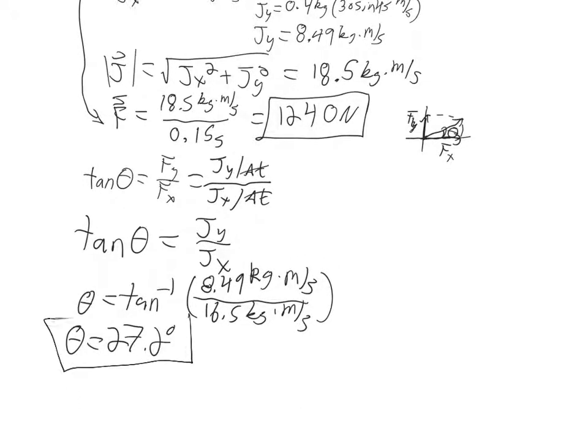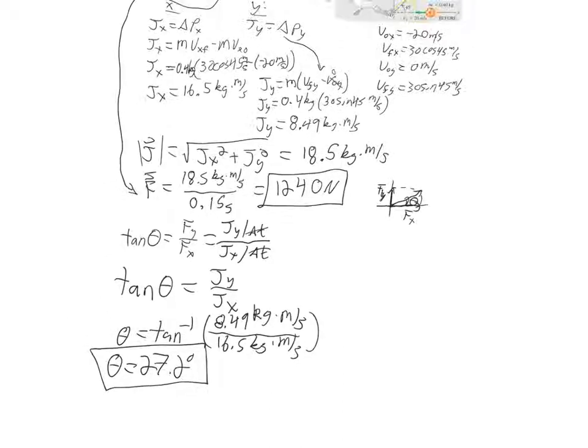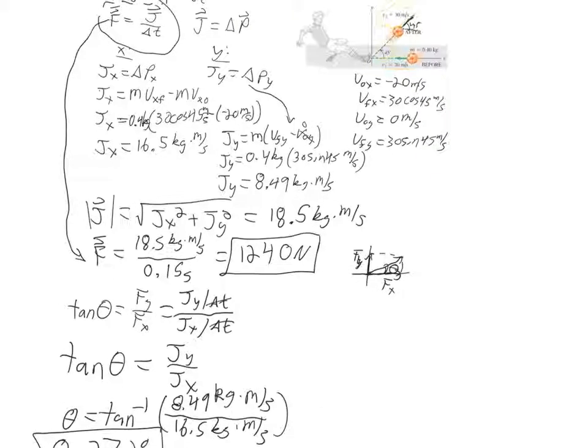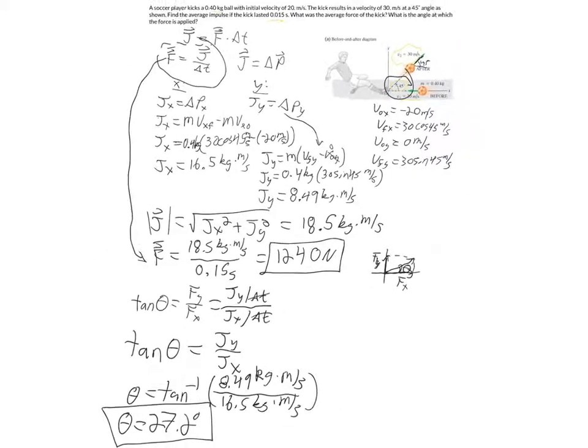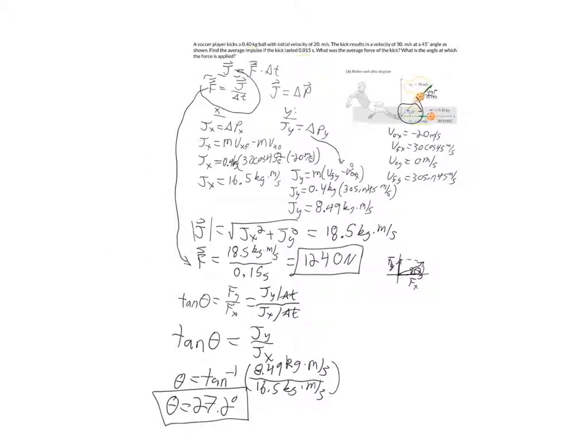And so, while he aimed his force at 27.2 degrees, the ball actually left his foot at a 45-degree angle, and he missed high. So if you notice, with amateur soccer players especially, it's easy to miss high, and this is part of the reason. So, that's a good sample problem. Hopefully, it made sense. Please let me know if you have any questions. Other than that, have a box-worthy day.